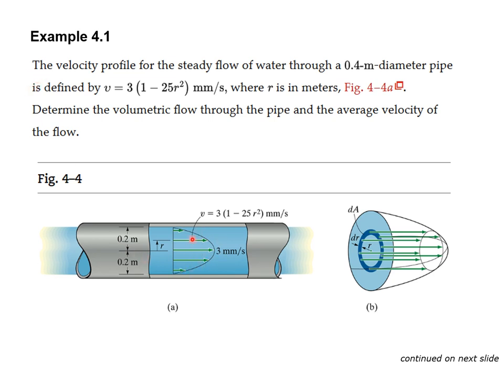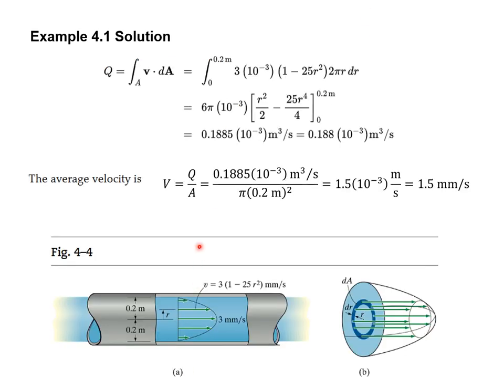So let's look at example 4.1. Here we have the velocity profile as seen here for the steady flow of water through a 0.4 meter pipe is defined by the following formula. We want to determine the volumetric flow through the pipe and the average velocity of the flow. So we can calculate the flow rate as the integral of v dot dA. And since the velocity is not constant, we have to actually use the integral. So we integrate from the center of the circle out to the radius, which is 0.2 meters. This is our formula for our velocity. And the dA is simply 2 pi r dr. That's the cross-sectional differential area. So when you perform the integral, you get, plug in the limits, you get 0.188 times 10 to the minus third meters cubed per second.